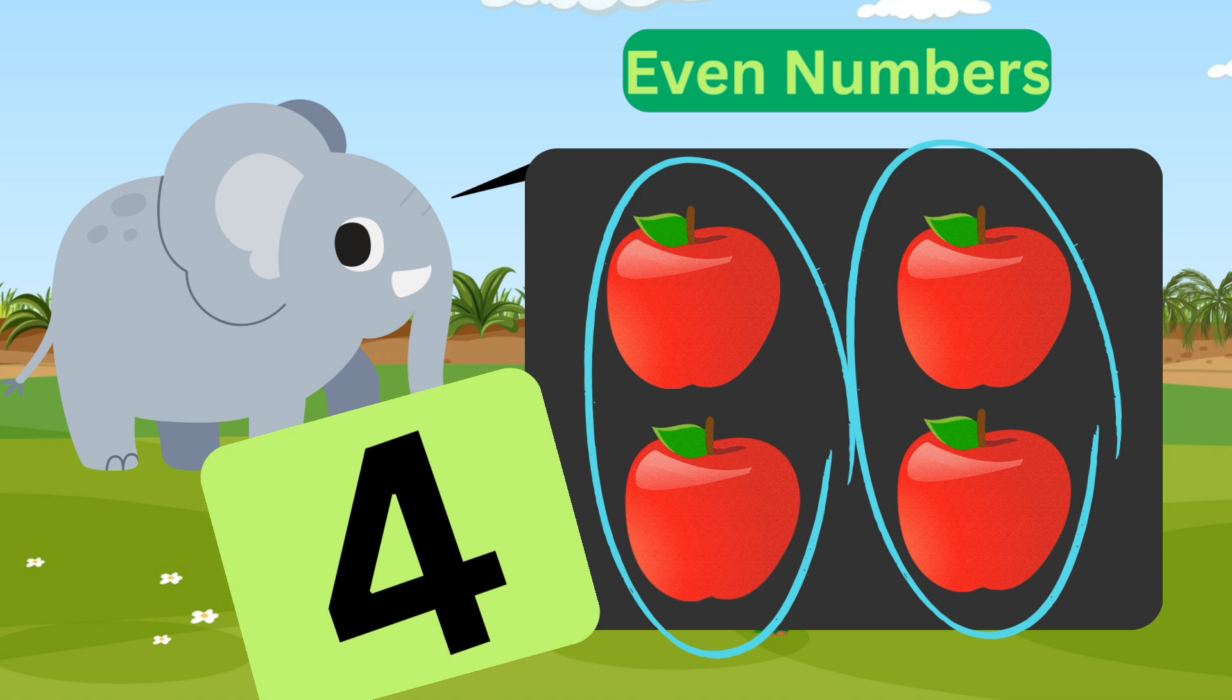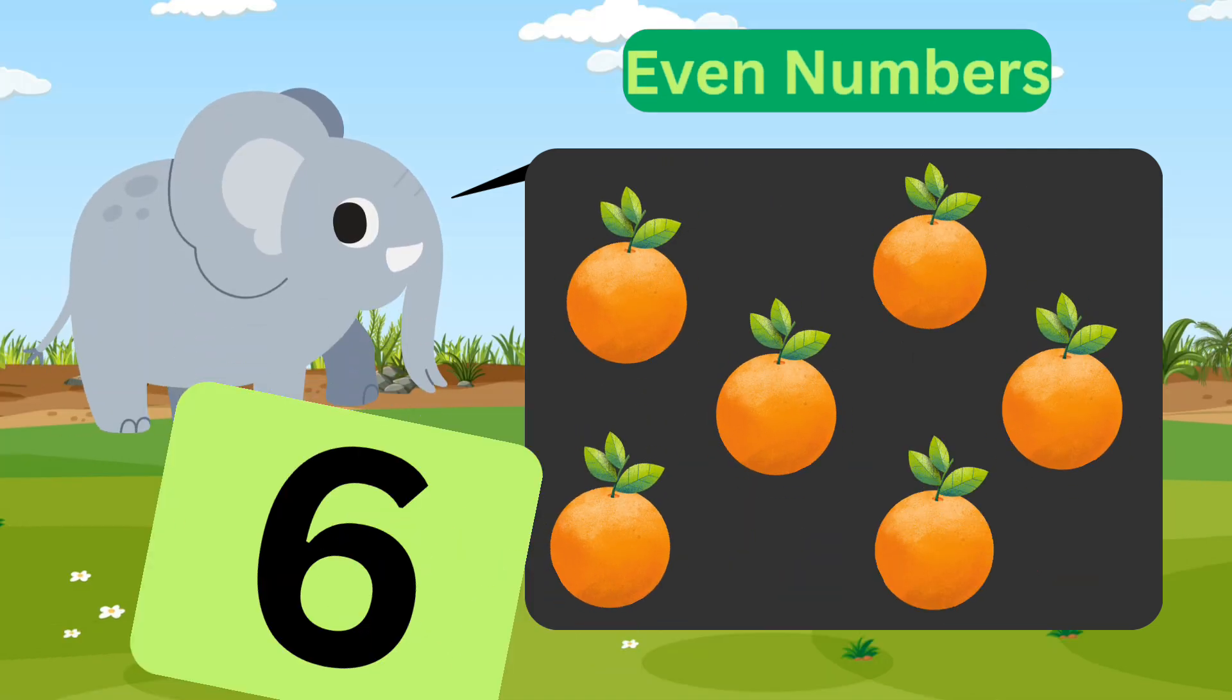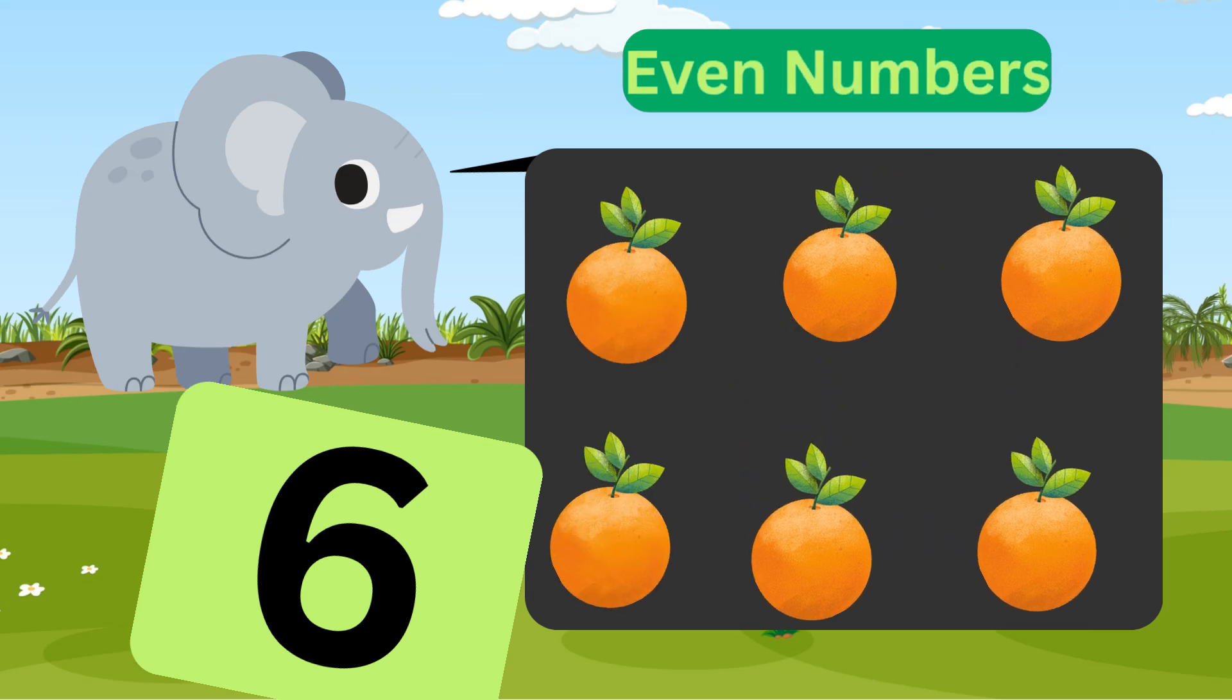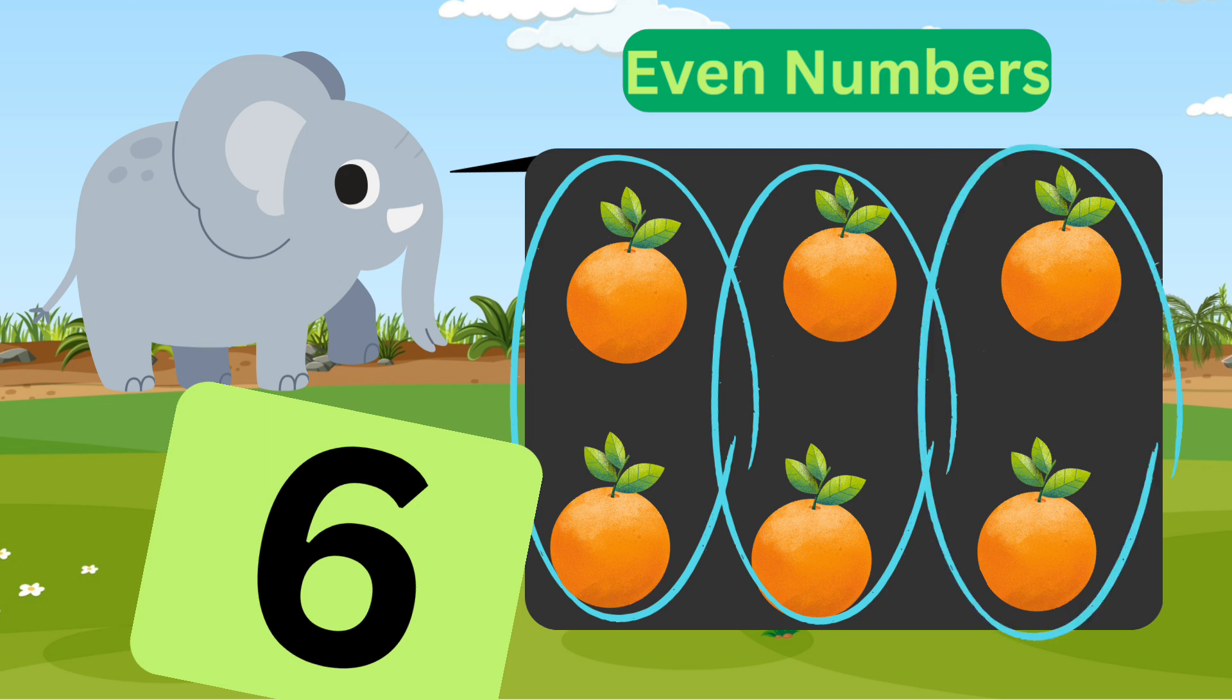Look, we have six oranges here. Shall we make groups of two to see if six is an even number? Let's make one group here, another one here, and the last one over here. Hmm, there are no oranges left over. This means number six is an even number.